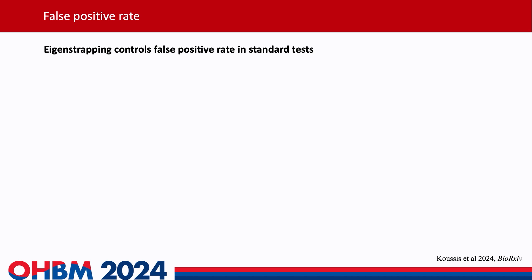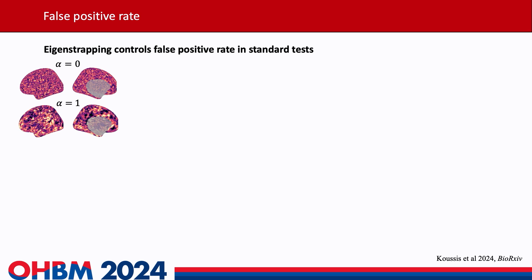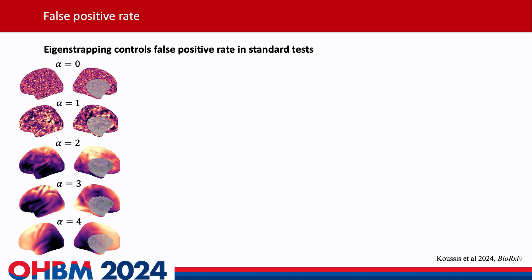We wanted to find out whether we were still susceptible to spatial smoothness driving false positives. So we derived a ground truth by simulating randomly correlated pairs of Gaussian random fields. Gaussian random fields can be parametrically smoothed with the parameter alpha. We increased alpha, generating 1,000 GRF pairs at each alpha, going from complete white noise at alpha equals zero to data with about a 50 millimetre smoothing kernel at alpha equals four — really putting our method through its paces.